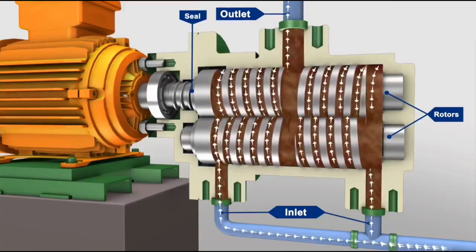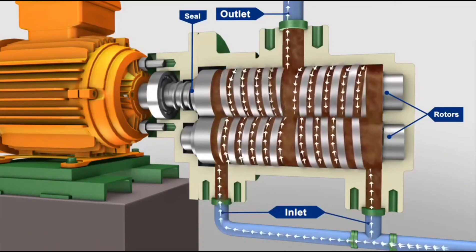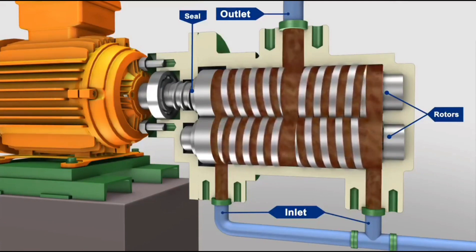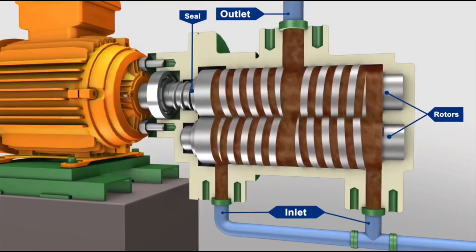The successive sets of seals form fully enclosed cavities that move continuously from inlet to outlet. These cavities trap liquid at the inlet and carry it along to the outlet, providing a smooth flow.